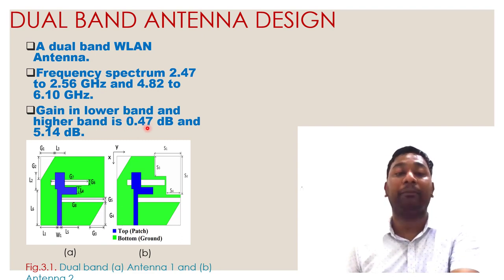That disadvantage we can overcome by using metamaterial. Here two antennas we have seen: first one is considered as antenna one, second one is considered as antenna two. Two layers are there: upper layer is called patch and lower layer is bottom.